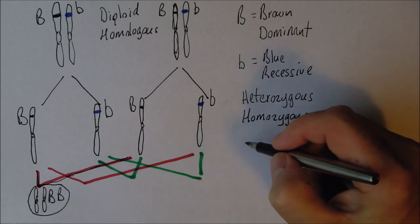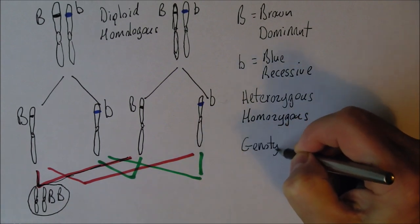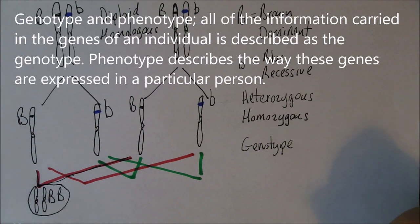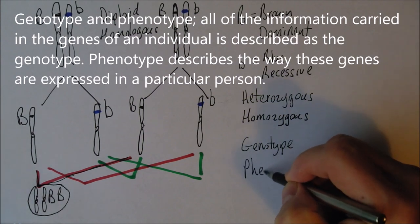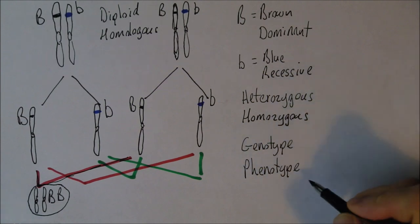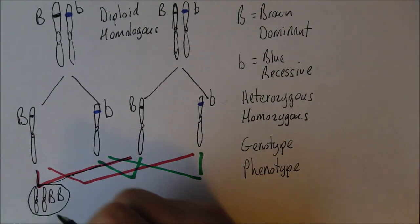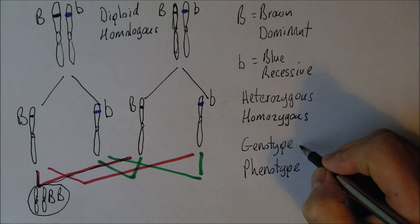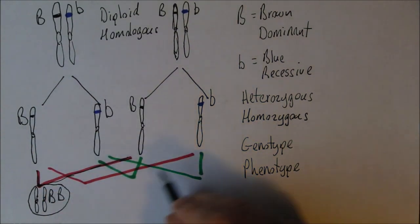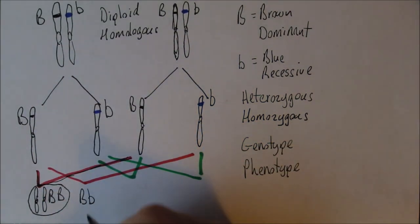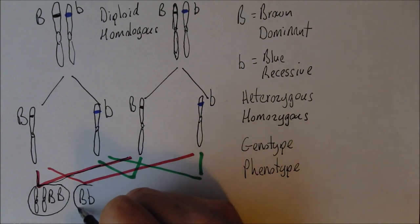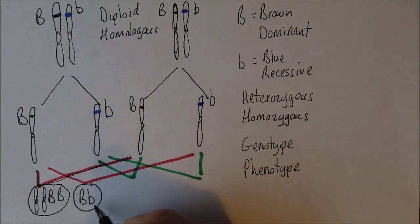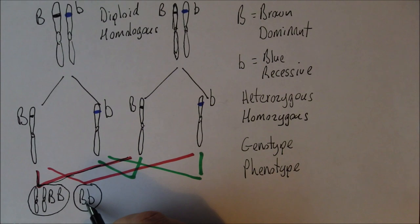We can describe this as their genotype. A genotype is the genes present, whereas the phenotype is what you actually see in the individual. This individual who is big B, big B is genotypically homozygous and phenotypically would have brown eyes. In another combination, we get a big B and a small B meeting up, so genotypically this individual is heterozygous for eye colour. But phenotypically they'll still be brown-eyed because brown is the dominant gene.